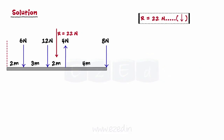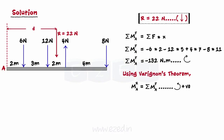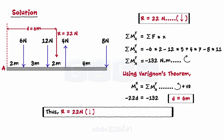Then, we have to find the location of resultant from point A. Let us assume that the resultant R is at a distance d to the right of point A. We will first find the summation of moments of all the forces about point A. By applying Varignon's theorem, we can find the value of d. On substituting the values and simplifying, we find d is equal to 6 meters. Hence, the resultant force of magnitude 22 newton acts at a distance of 6 meters to the right of point A.